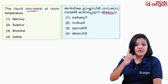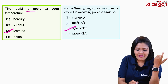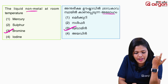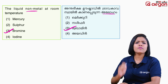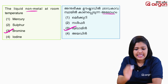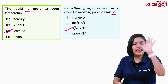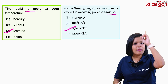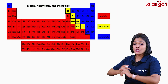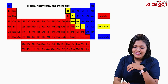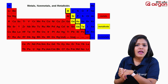The options include Mercury, sulfur, bromine, and iodine. The correct answer is bromine, because mercury is a metal, not a non-metal. I am marking here 'non-metal' — so the answer is bromine. Mercury is a metal.